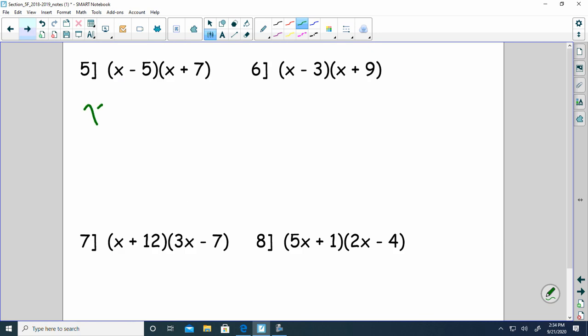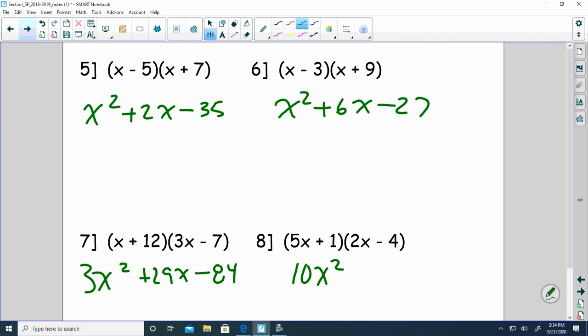Same with these ones. These should be relatively simple. You've seen these before. So 3x squared plus 36x minus 7, so plus 29x, and then minus 84. And 10x squared or 2x minus 20 is negative 18x minus 4.